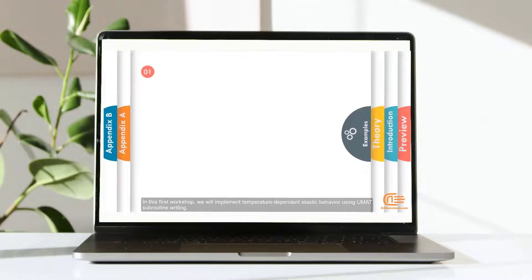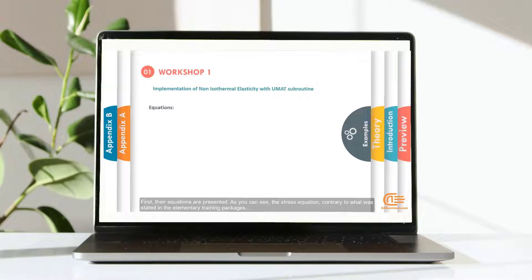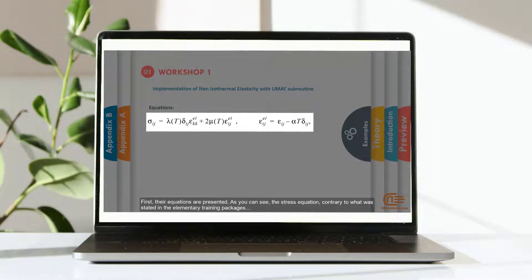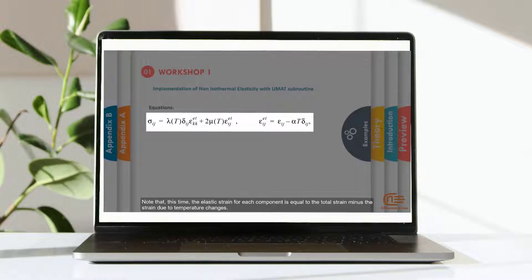In this first workshop, we will implement temperature-dependent elastic behavior using UMAT subroutine writing. First, their equations are presented. As you can see, the stress equation contrary to what was stated in the elementary training packages is temperature-dependent despite the similarity only in mechanical properties such as lambda and mu that are temperature-dependent. Note that this time the elastic strain for each component is equal to the total strain minus the strain due to temperature changes.